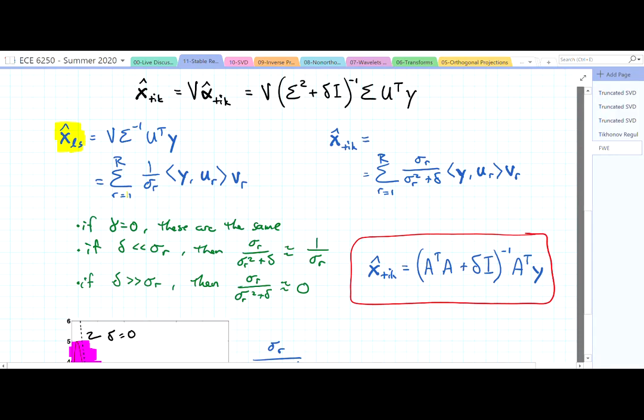When we express this in the spectral decomposition form, we've seen this before. We basically have 1 over sigma_r, then y inner product with u, and then times v.